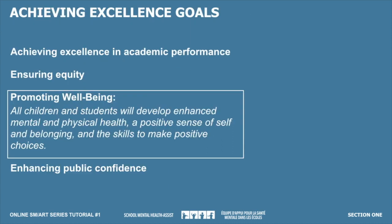Soon after this strategy was released, the renewed vision for Ontario students was described in Achieving Excellence: A Renewed Vision for Education in Ontario. In addition to prioritizing academic excellence, equity, and public confidence, a new pillar was introduced related to promoting well-being. The vision states that all students will develop enhanced mental and physical health, a positive sense of self and belonging, and the skills to make positive choices.